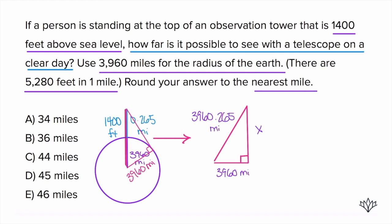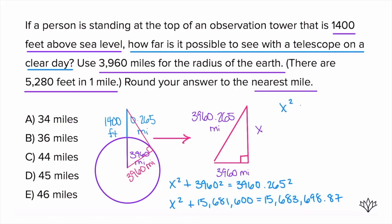We have X squared plus 3960 squared equals 3960.265 squared. Now we're going to work through this. We need to do 3960 squared and we need to do 3960.265 squared. On the left, we have 15,681,600. That's 3960 squared. On the right side, we have 15,683,698.87. Listen, the new PSAT, the new SAT, and the ACT, sometimes you're going to see numbers that are longer, and they just put that there to make it seem like the question's a lot more complicated than it is. Remember, these are still just numbers. Just because they're longer and you're dealing with decimals, it doesn't change the math steps.